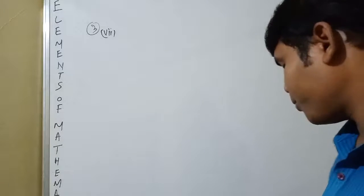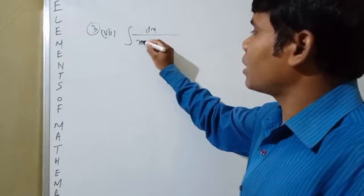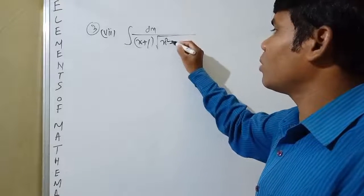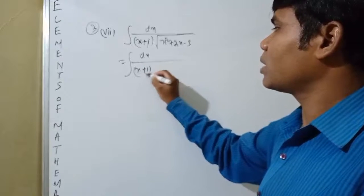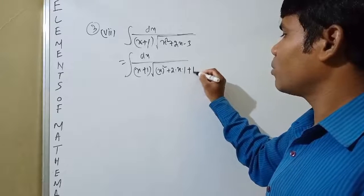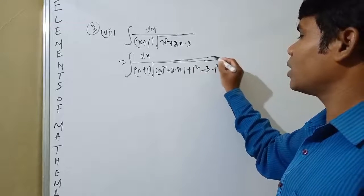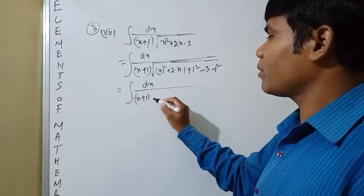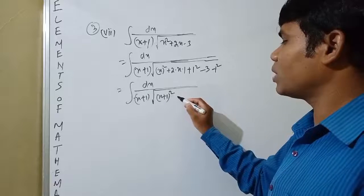The question is: integration of dx divided by (x+1) times root over (x²+2x-3). We rewrite x²+2x-3 as (x+1)² - 3 - 1, adjusting by adding and subtracting 1², so that the value is not changed. This gives us dx divided by (x+1) times root over (x+1)² minus 4, where minus 4 equals minus 2 squared.